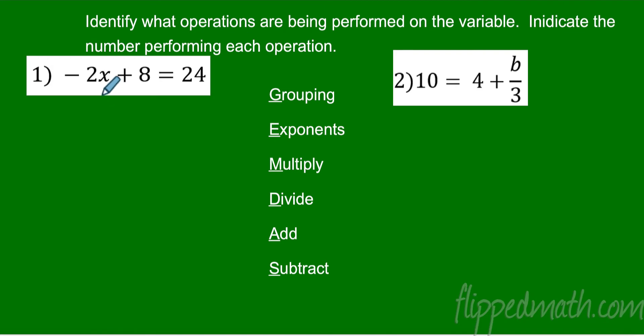So the first thing here, I want to isolate this X. So I only care about what's being done to that X on the same side as the X. So this 24, it's on the other side, it's not really performing any operation over here. So we have two numbers, we have this negative 2 and we have this positive 8, so we need to talk about what operations are happening.